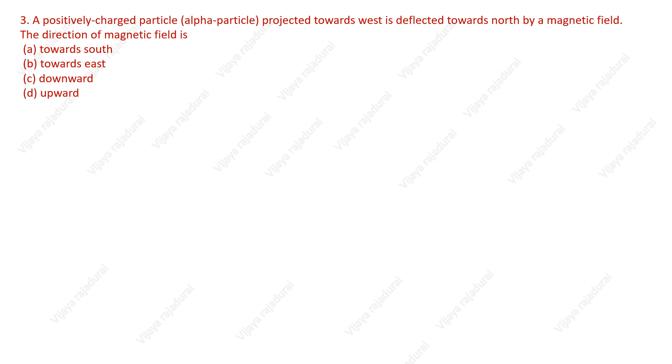In this video, we are going to see the answer for a positively charged particle, that is alpha particle projected towards west is deflected towards north by a magnetic field. The direction of the magnetic field is, the options are shown here.